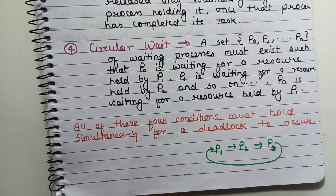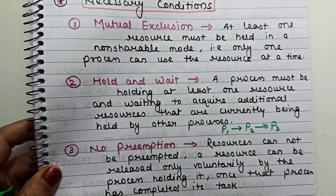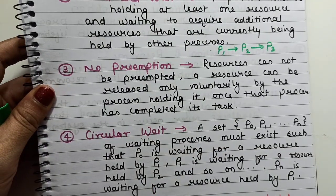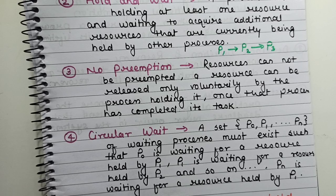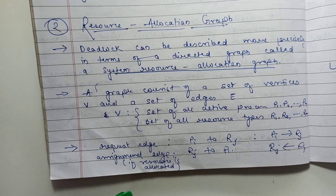All four conditions — mutual exclusion, hold and wait, no preemption, and circular wait — must hold simultaneously for a deadlock to occur. These are the four necessary conditions that characterize deadlock. The next method for deadlock characterization is using a resource allocation graph, which is another method through which you can characterize deadlock in a computer system.